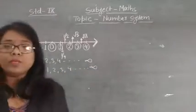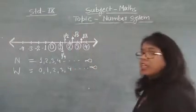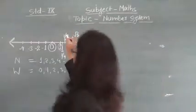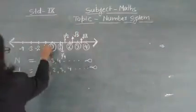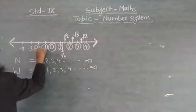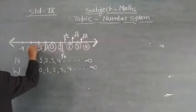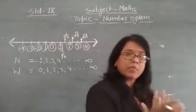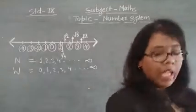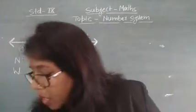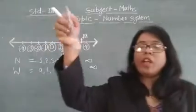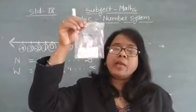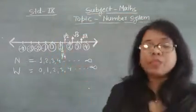Now Gia's turn comes. Gia picks numbers: minus 1, minus 2, minus 3 — all negative numbers she picks and keeps them in a pouch.